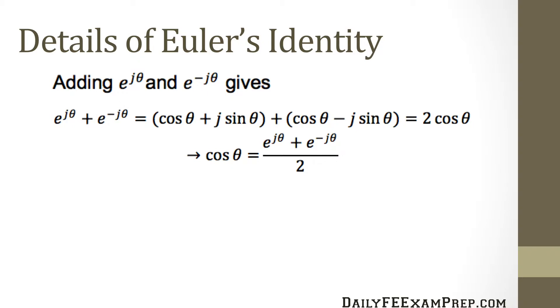If we add e raised to the j theta and e raised to the minus j theta, that gives us e to the j theta plus e raised to the minus j theta equals cosine theta plus j sine theta plus cosine theta minus j sine theta, and that equals 2 cosine theta which gives us cosine theta equals e raised to the j theta plus e raised to the minus j theta divided by two.